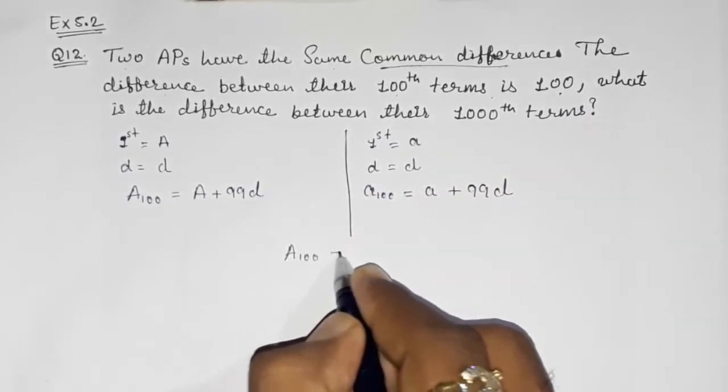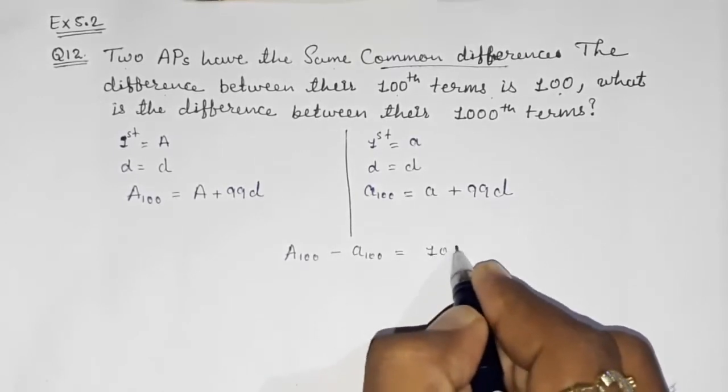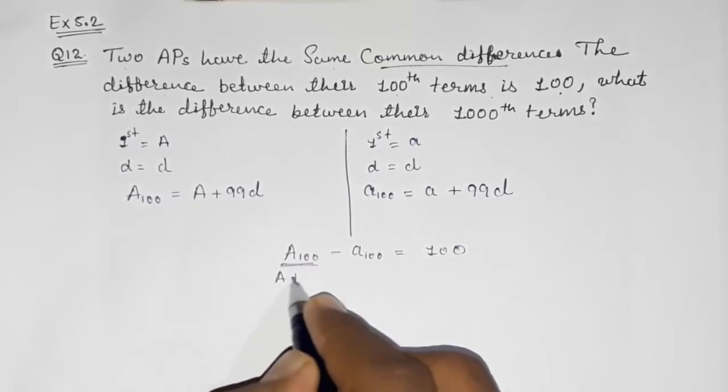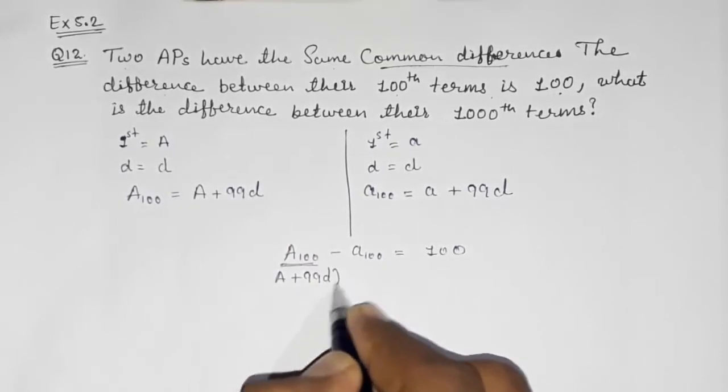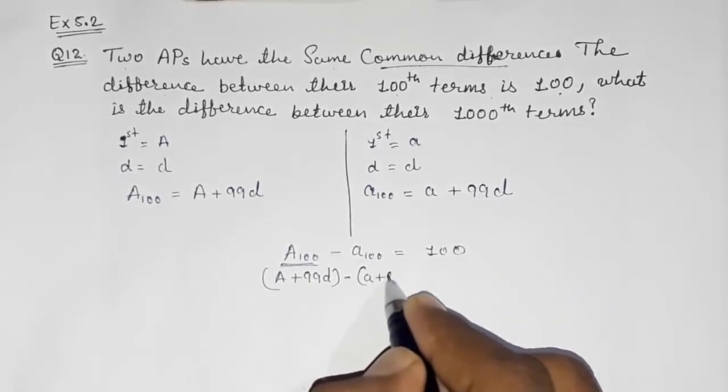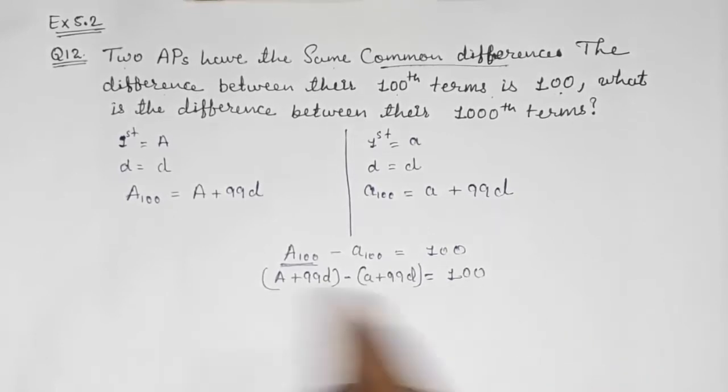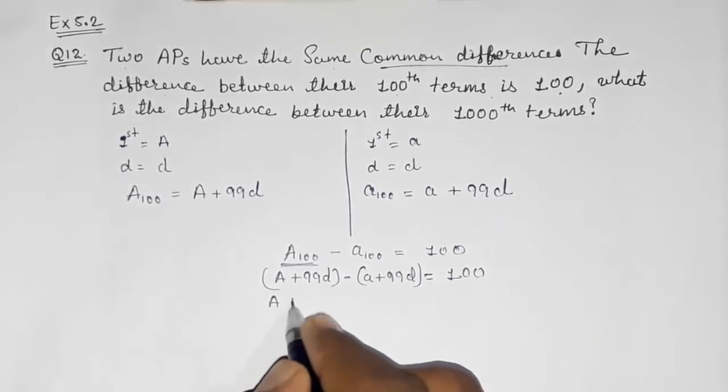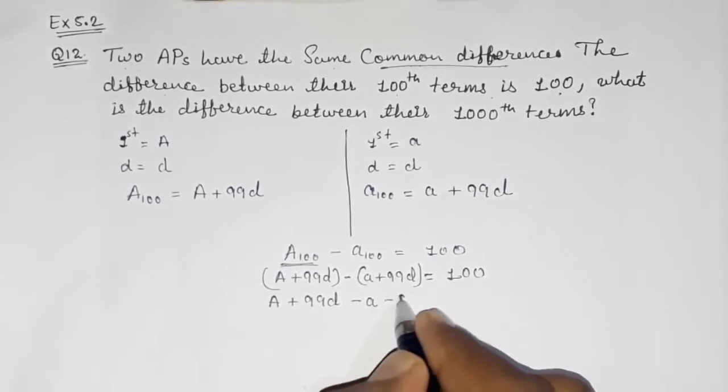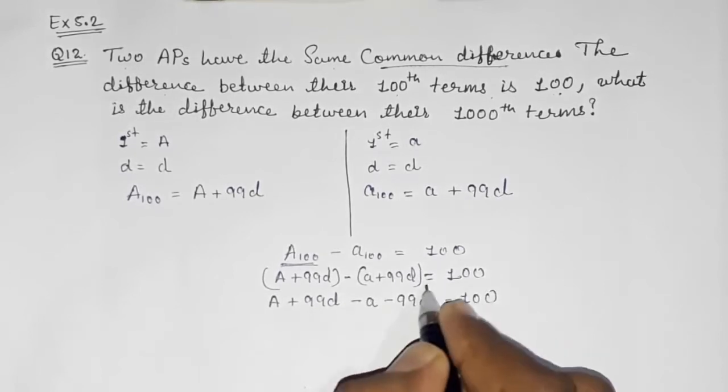Now they told us that the difference of their 100th term is 100, so I am going to subtract it. A₁₀₀ minus a₁₀₀ is equal to 100. Put the values: A + 99d minus (a + 99d) is equal to 100. Now open the bracket: A + 99d - a - 99d is equal to 100.